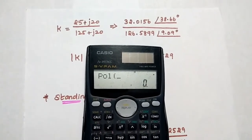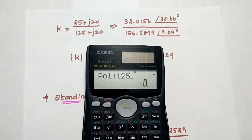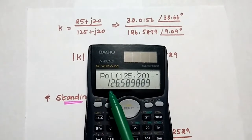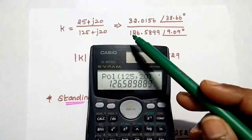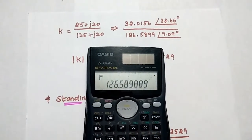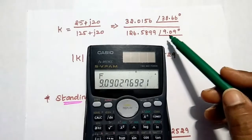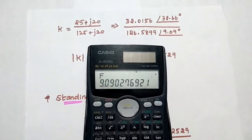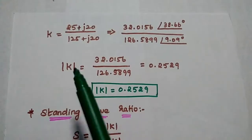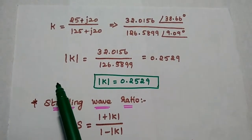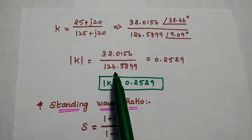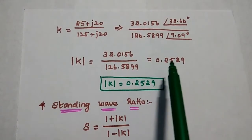For the denominator, press shift plus for polar, then give real term 125 and imaginary term 20. Close the bracket and press equal — we get 126.5899. Press alpha and the angle symbol, then equal, to get the phase as 9.09 degrees. After converting into polar coordinates, we take only the magnitude for the reflection coefficient: 32.0156 divided by 126.5899 equals 0.2529. This is the reflection coefficient value.